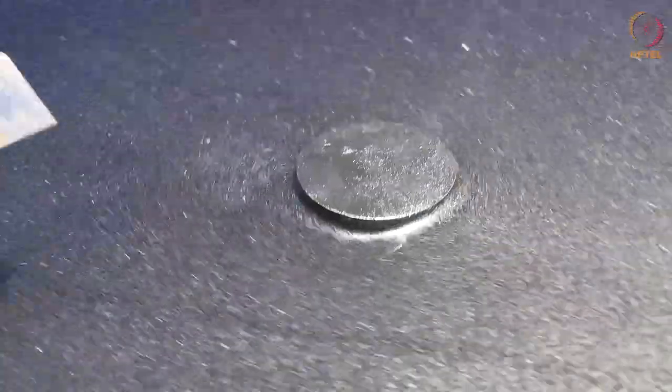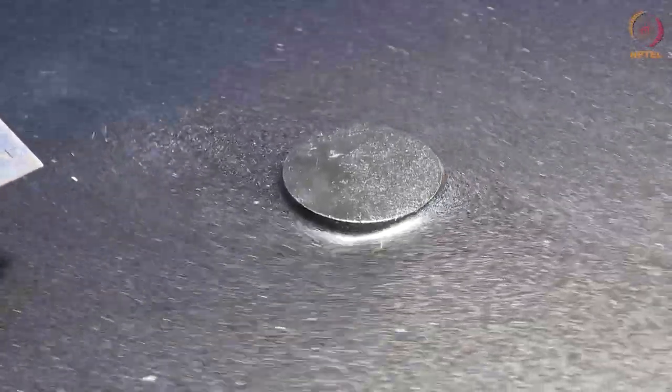Now let us increase the velocity and observe the vortices. Now you can observe that the vortices are forming faster just behind the cylinder.